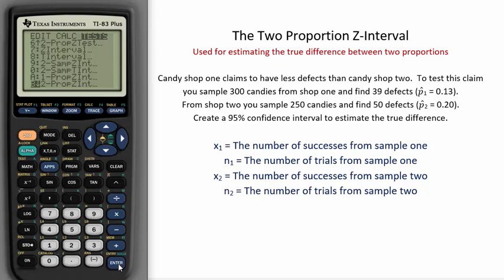Once there, enter your data. Candy shop 1 claims to have fewer defects than candy shop 2. To test this claim, you sample 300 candies from shop 1 and find 39 defects. Here, x₁ = 39 is the number of successes from sample 1, and n₁ = 300 is the number of trials from sample 1.